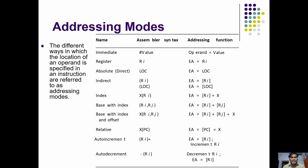The next addressing mode is register addressing mode. Here the data is available in a register, and from that register the processor accesses the data. That is called register addressing mode. In the first case, the value is directly taken using the hash symbol, and in this case the value is accessed from a register — that is register addressing mode.